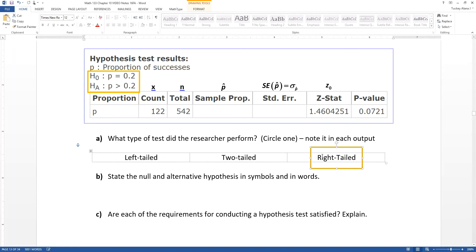So you can see right up here, because I boxed it, that your null and alternative hypotheses are written out for you already in symbols. So you can tell this is a right-tailed test because it has a greater than symbol in the alternative hypothesis.